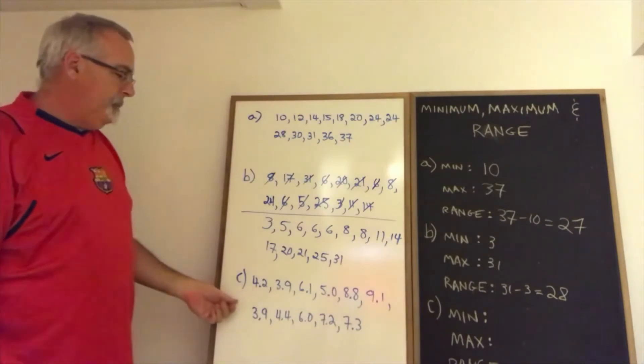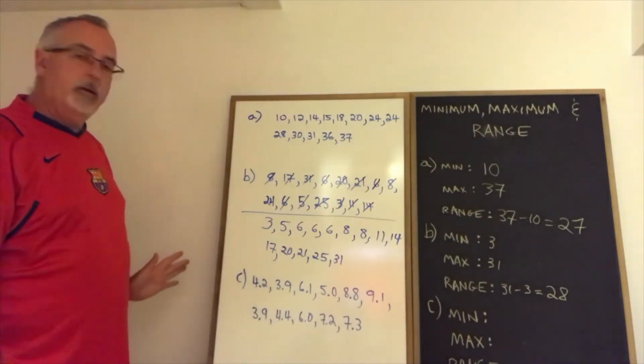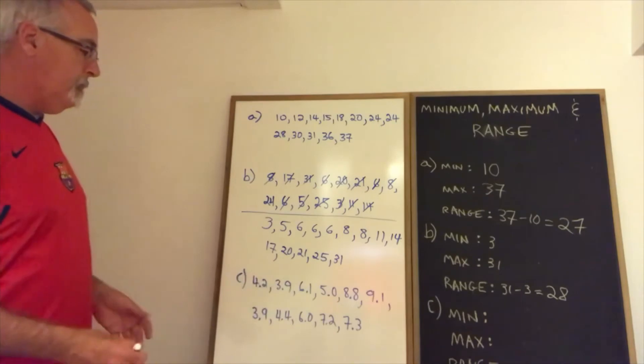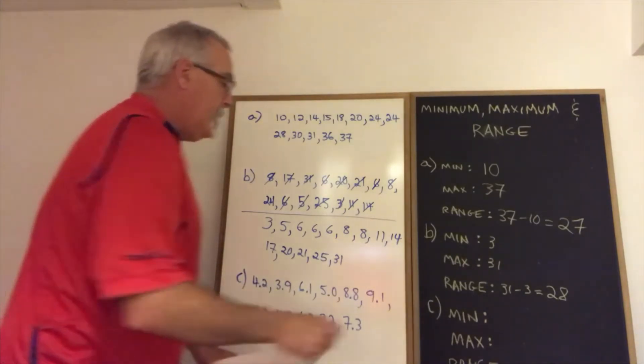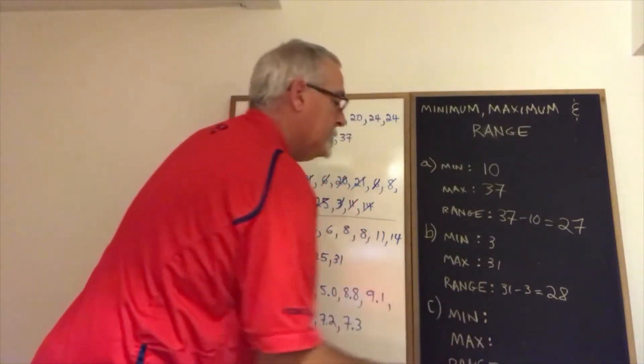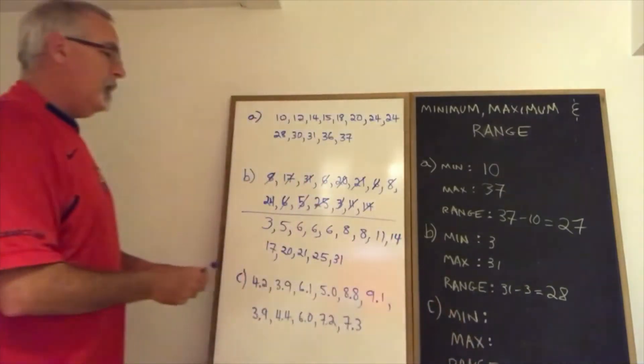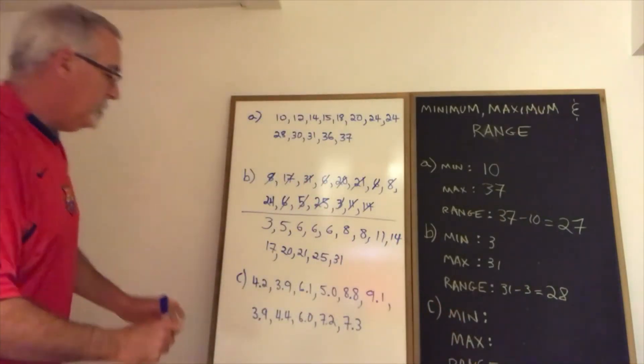Now C. Again, the numbers are not given in order from smallest to largest. So we're going to have to reorder them. But also these numbers have decimals. So we just want to slow down when we do our subtraction to make sure we don't make a mistake with that.